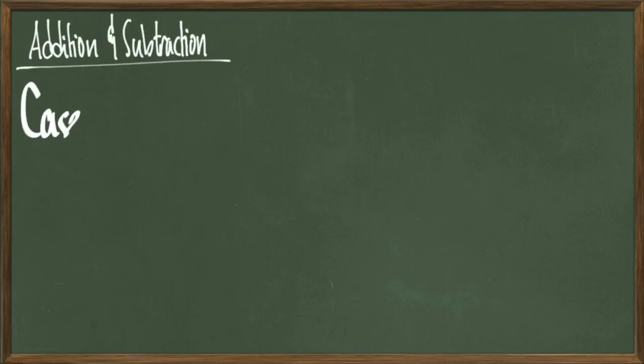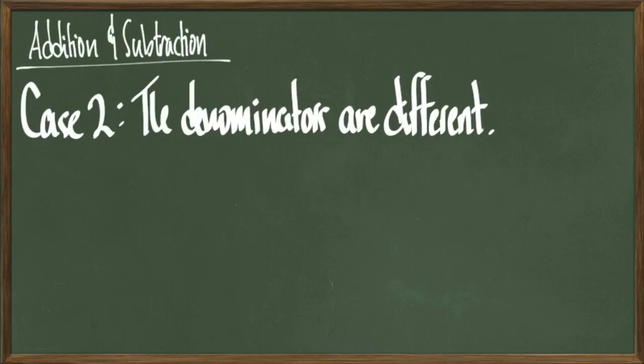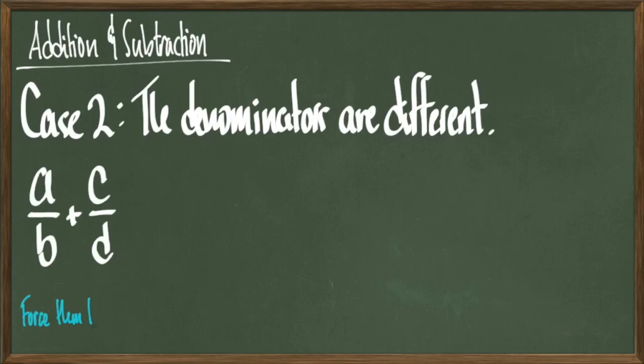The second case is when the denominators in our different fractions are not the same. In other words, when they do not have common denominators. So, given a over b plus c over d, we need to sort of force common denominators to be present. You might have heard the term find a common denominator before, so that's exactly what we're going to do. The basic idea is we're going to change the way each fraction is written without changing its original value. Remember that if I multiply a number by 1, its value doesn't change. And also, remember that any non-zero number divided by itself is equal to 1.